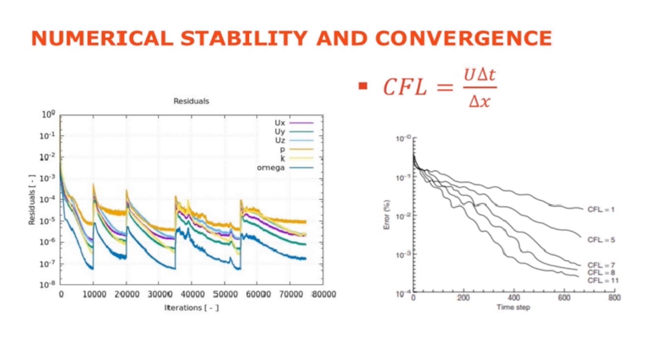For transient analyses, which the vast majority of turbomachinery problems are, one condition we must ensure for stability and to ensure convergence is the Courant or CFL number. The physical explanation of the CFL number is related to the distance, u delta t, the flow moves through a cell delta x within a time step period delta t. And to ensure that we meet these stability conditions, then it's ideal to have a CFL number less than 1. This is strictly true if we're using an explicit solver, which is conditionally stable.